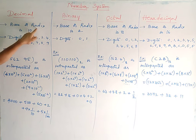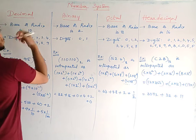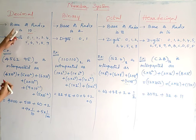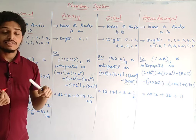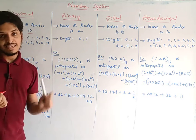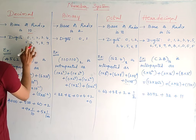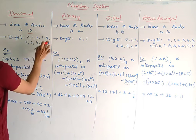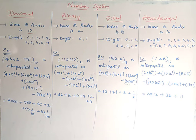For the decimal number system, we need a base, also called a radix. The base value is 10. Base means the number of digits used in that particular number system. The digits are 0 to 9 — we need 10 digits. So the base or radix is 10.